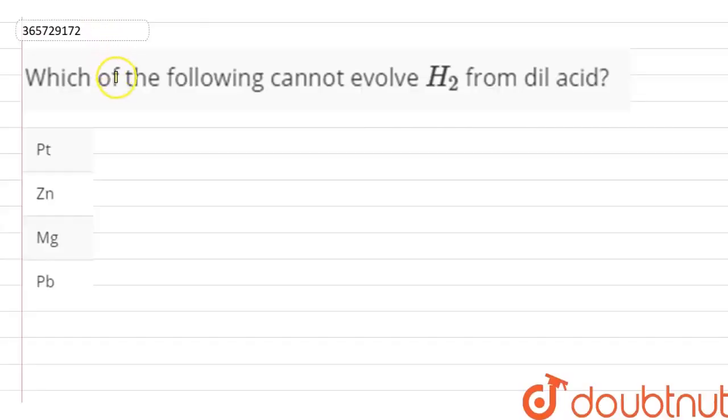Hi everyone, I have a question: which of the following cannot evolve hydrogen from dilute acid? If a metal cannot evolve hydrogen in the presence of dilute acid, let's see.